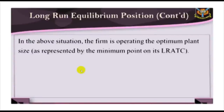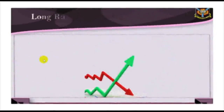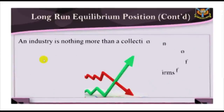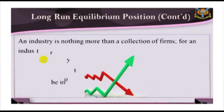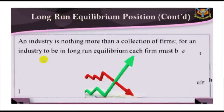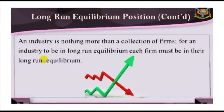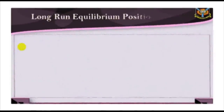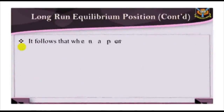An industry is nothing more than a collection of firms. For an industry to be in long-run equilibrium, each firm must be in its long-run equilibrium. It follows that when a perfectly competitive industry is in long-run equilibrium, all firms in the industry will be selling at a price equal to the short-run average total cost, and they must be in zero-profit equilibrium.